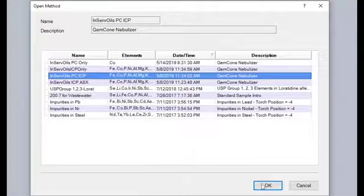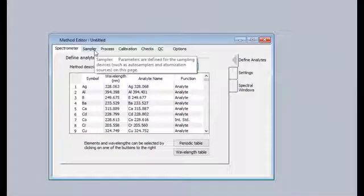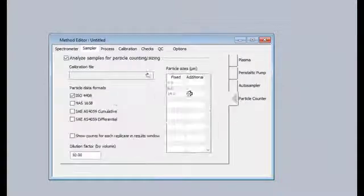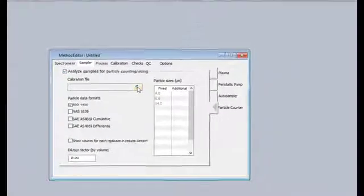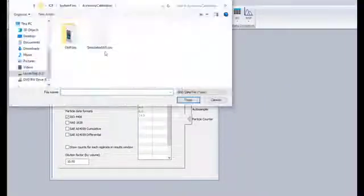Once opened, the sampler particle counter tab contains all of the controls for the particle counter, including an option to enable and disable the particle counting analysis from method to method. If enabled, a calibration file for the sensor must be selected for the system to return valid particle count results.